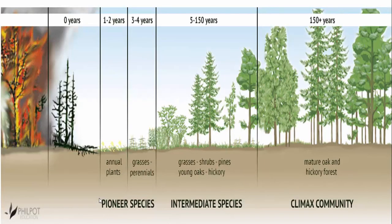Here is an example of secondary succession where the disturbance is a wildfire. We can see that not all life has been destroyed — the climax community, the trees, has been destroyed, but we can still see some grass. Over time, the climax community returns, and we can see it has come back and reached its pinnacle once again. This is secondary succession because life is beginning again, not for the first time.